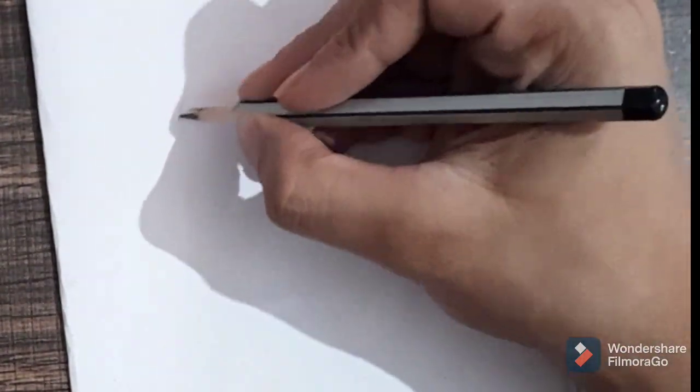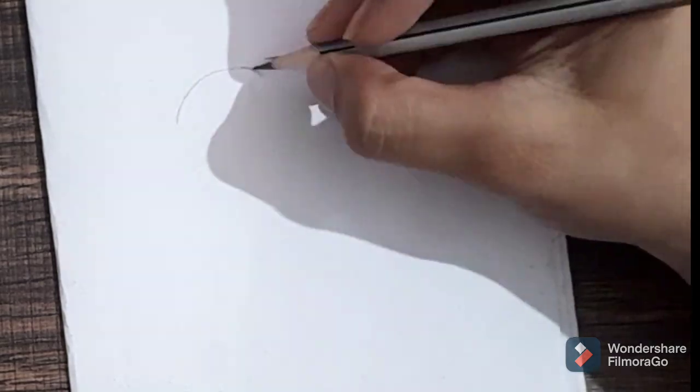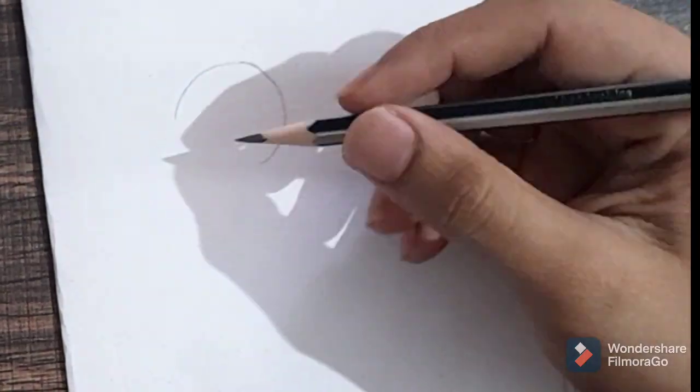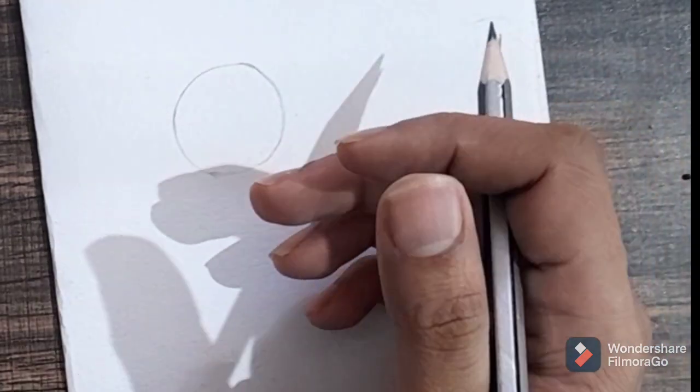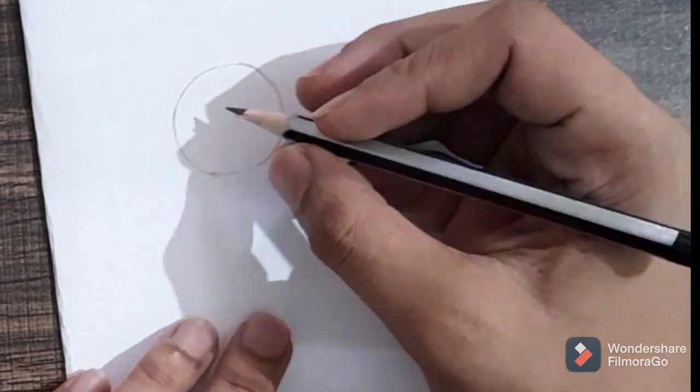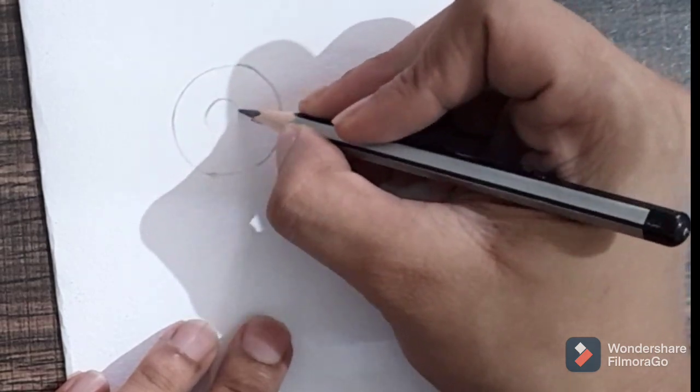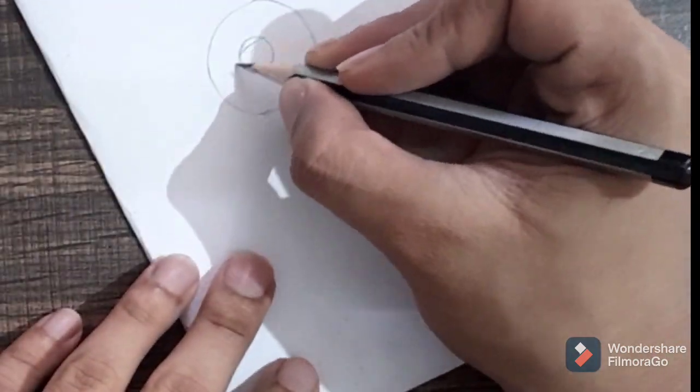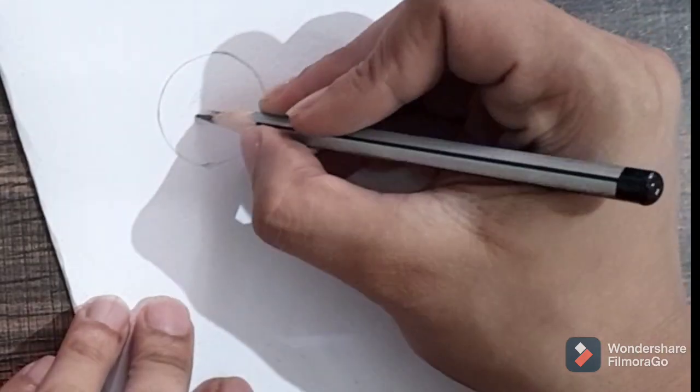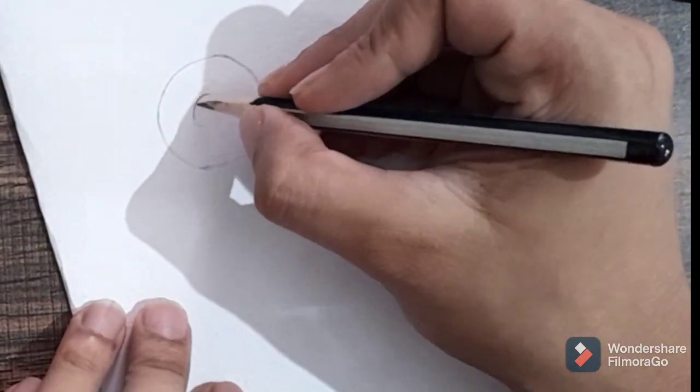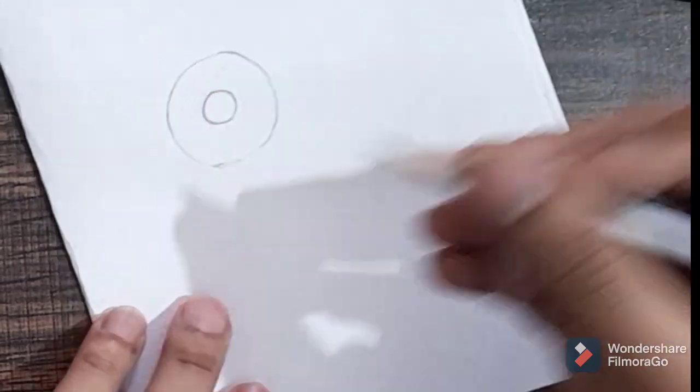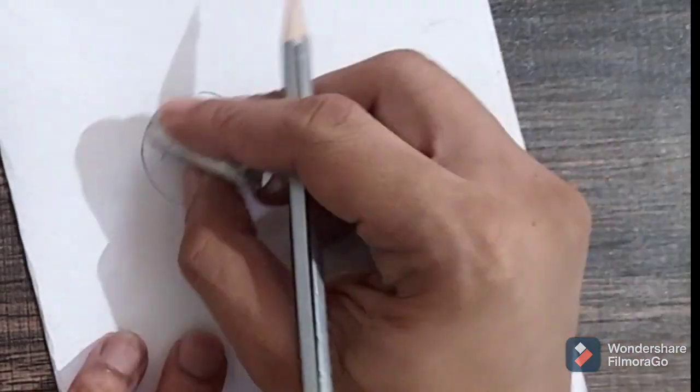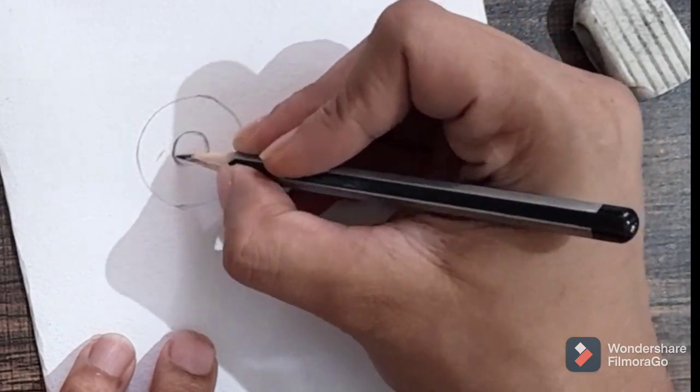Hi friends, now we are going to make a circle. The first step is to make a circle in the center.